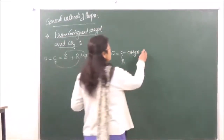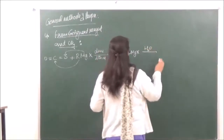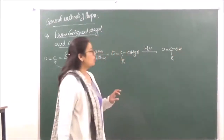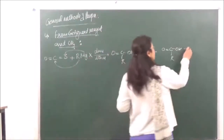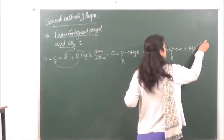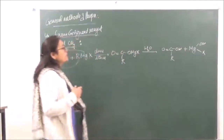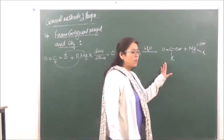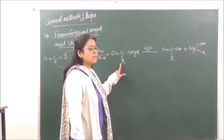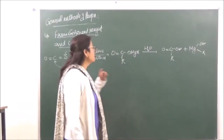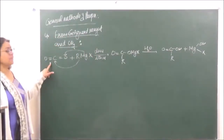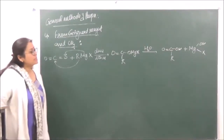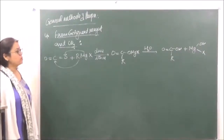Hydrolysis of this with H₂O gives us the carboxylic acid R-COOH, which is the respective monocarboxylic acid, plus Mg(OH)X. Please remember that the number of carbon atoms present in the carboxylic acid will depend upon the alkyl group attached to the Grignard reagent, because carbon dioxide can only have one carbon atom. So the number of carbon atoms in the carboxylic acid depends on the carbon atoms present in the Grignard reagent.